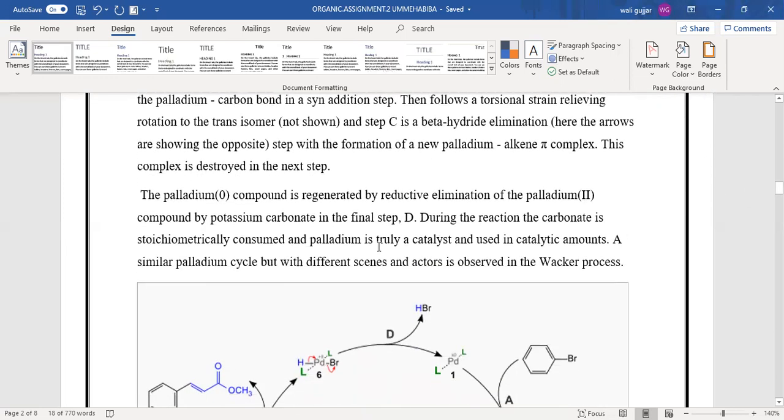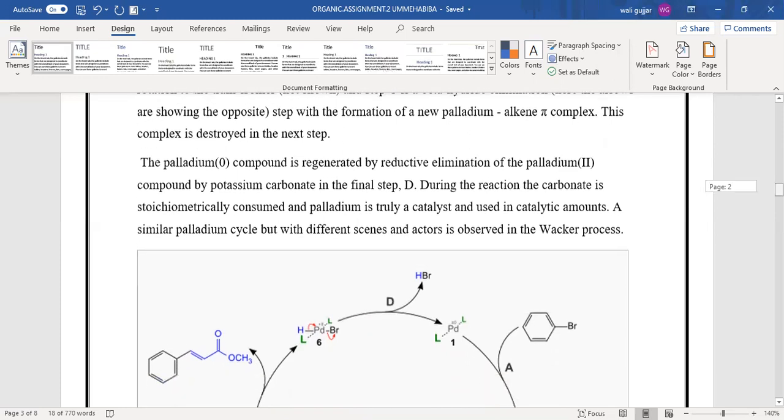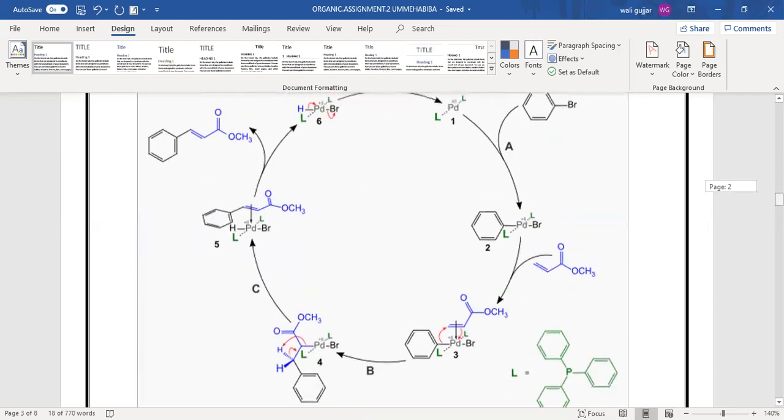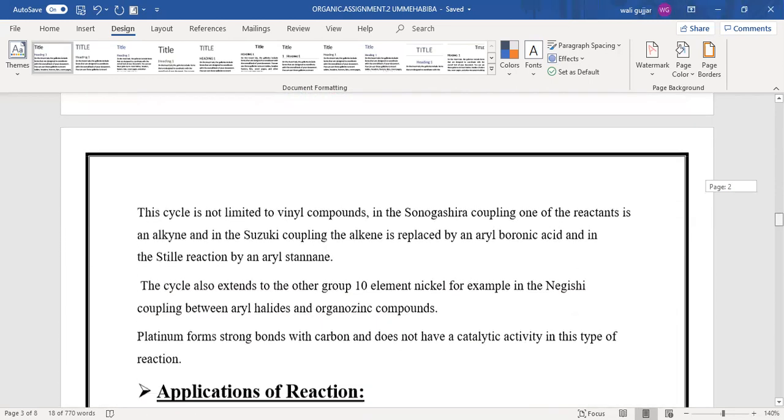The palladium compound is regenerated by reductive elimination of the palladium hydride compound by potassium carbonate in the final step D. During the reaction, the carbonate is stoichiometrically consumed and palladium is truly a catalyst and used in catalytic amounts. A similar palladium cycle but with different scenes and actors is observed in this process, and this is the mechanism of the Heck reaction.